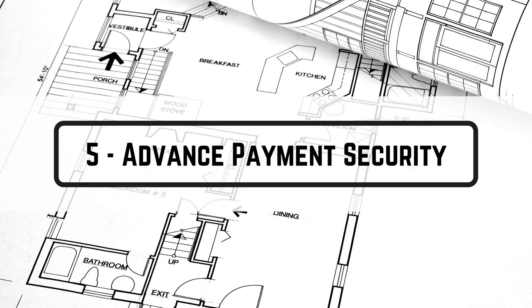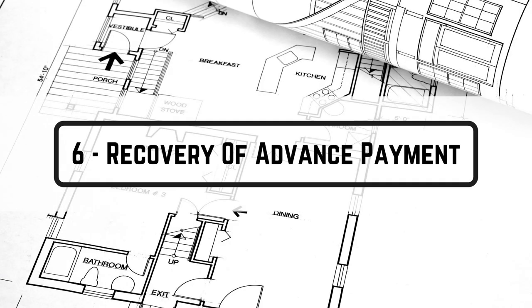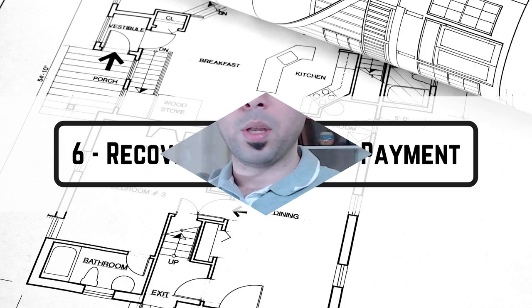The fifth term is advance payment security. Advance payment is paid upon signing the contract before starting the works, so what is the guarantee for this amount paid against nothing — no works have been done yet. You have to keep an advance payment form of security in the contract, which can be a security check or bank guarantee. Money must be paid against something — either work done or a form of security.